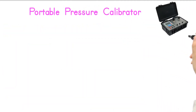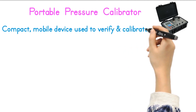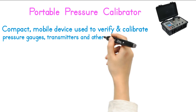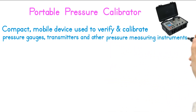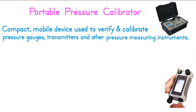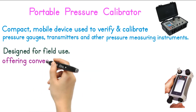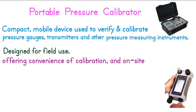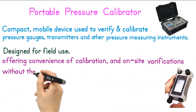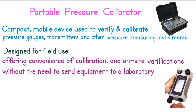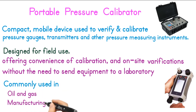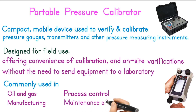Portable Pressure Calibrator. A portable pressure calibrator is a compact, mobile device used to verify and calibrate pressure gauges, transmitters, and other pressure measuring instruments. Unlike stationary calibrators, portable pressure calibrators are designed for field use, offering the convenience of calibration and on-site verification without the need to send equipment to a laboratory or calibration center. These calibrators are commonly used in industries such as oil and gas, manufacturing, process control, and maintenance of equipment in the field.